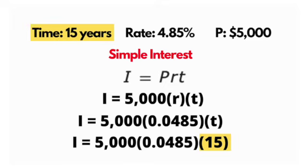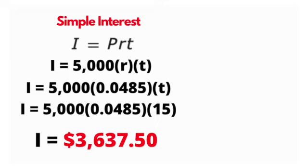Once we get that plugged in, really the most important part is converting that rate to the decimal. When we multiply those together, we get $3,637.50.